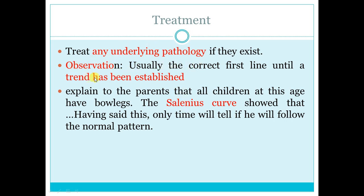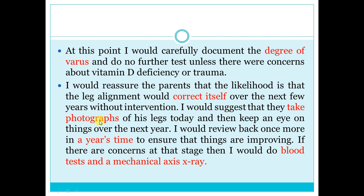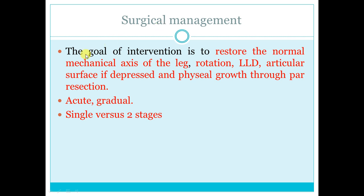Treatment: first establish the trend — is it progressive, regressive, or stationary? If there is underlying pathology, manage it first. For example, for rickets, it should be healed before correction. Explain to the parents and draw the Salenius curve showing normal tibio-femoral angle in relation to age. If parents are anxious, take an X-ray to document the varus deformity. If you suspect metabolic disorder, take blood tests: alkaline phosphatase, phosphate, and calcium.